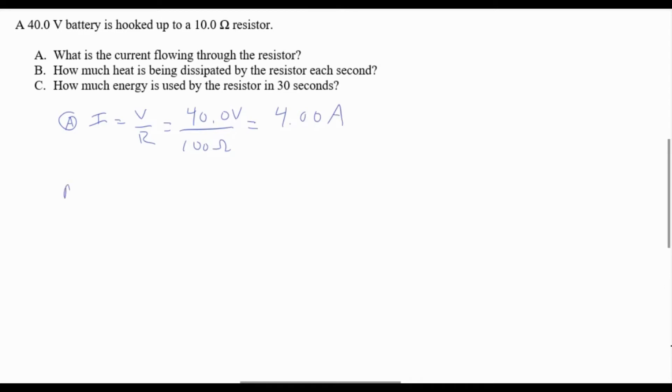For B, we can use our answer to A and say power is 40 volts times 4 amps, which is 160 watts. Or we could use only our given quantities and use P equals V squared over R to get the same answer. And for C, use energy equals power times time to get 4,800 joules.